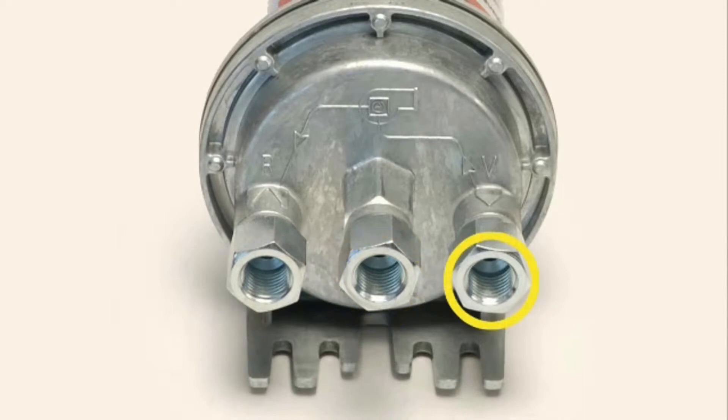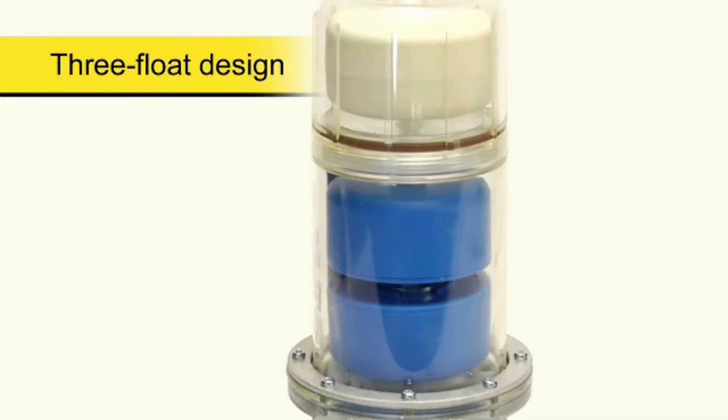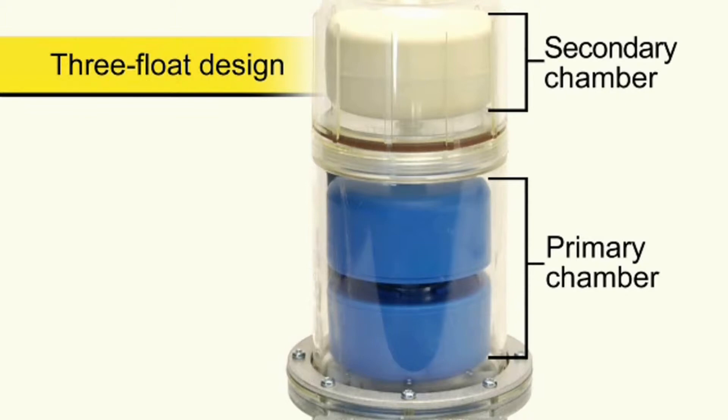A big advantage of our deaerator is its three-float design. There's a primary chamber with two floats, the deaerating chamber. A secondary chamber is designed to prevent any foam from escaping if the deaerator becomes over-aerated or over-foamed.